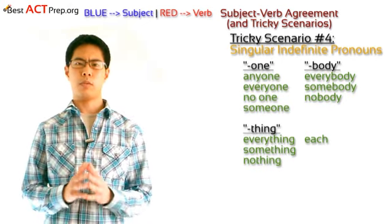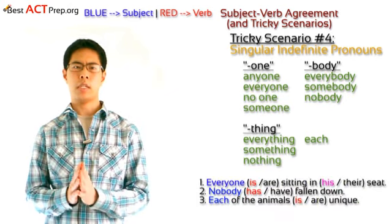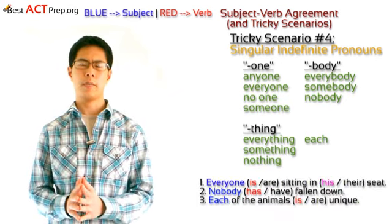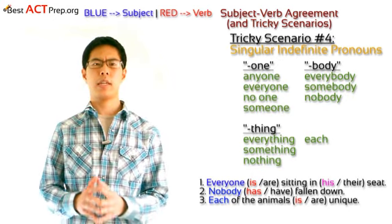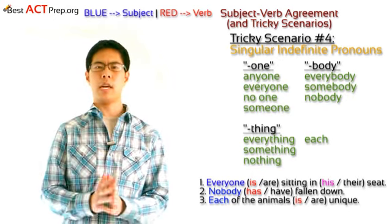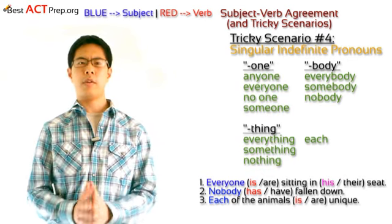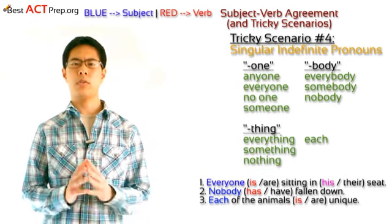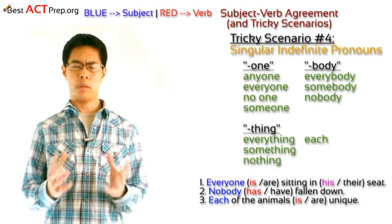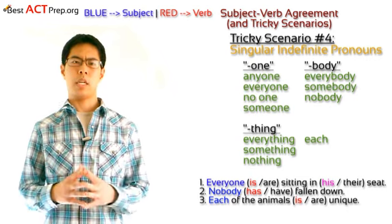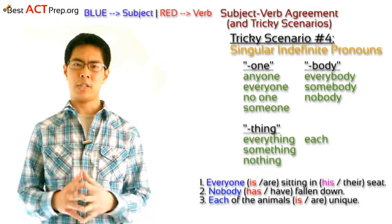For example, we would write the following: 'Everyone is or are sitting in his or their seat.' 'Nobody has or have fallen down.' And finally, 'Each of the animals is or are unique.' These indefinite pronouns can be tricky because some of them look like they should be plural — especially everyone, everybody, everything, and each.